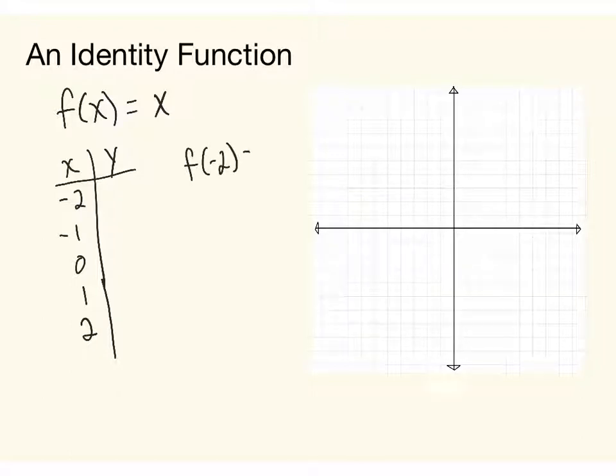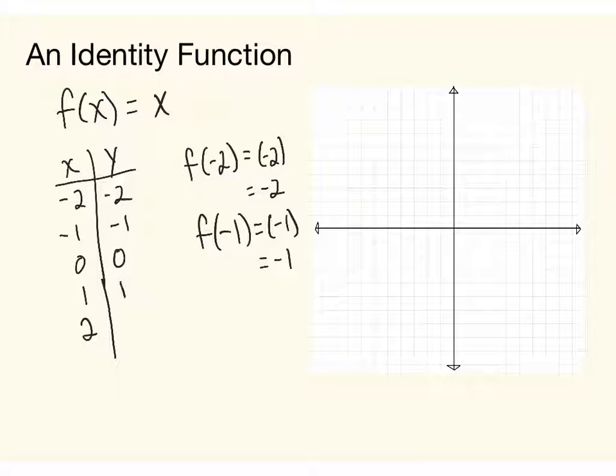then as I substitute, if I do f of negative 2, I do have a variable to substitute the negative 2 into. There's nothing to do with it though. We get simply negative 2. And so if I do this for one more, I hope you can see the pattern then. If I substitute negative 1, there's nothing that happens to change this. This is simply negative 1. So anything I input, I get the same value out.